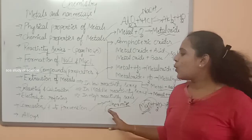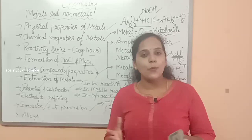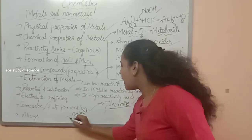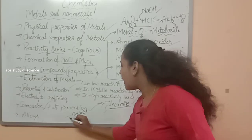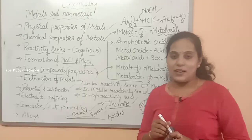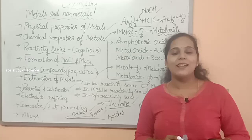Finally, alloys. Alloys are the homogenous mixture of two or more metals, or a metal with a non-metal. In your textbook, the alloys of bronze, brass, and solder are given. You must know all these alloys. If you know all these concepts perfectly, you can score maximum 8 marks. These are the concepts you have to learn from the lesson metals and non-metals.